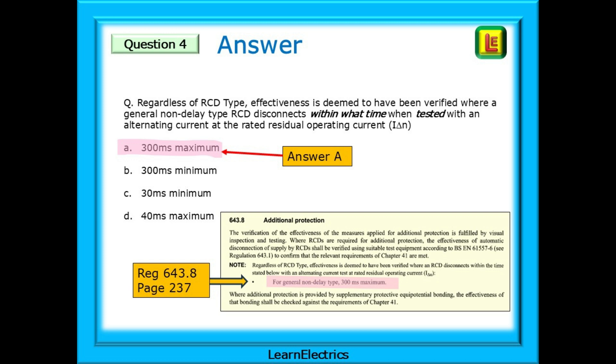In other words, the RCD tripping current shown on the device. The answer is A, 300 ms maximum, regulation 643.8, on page 237.